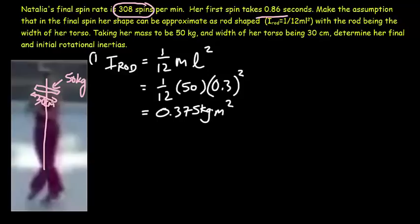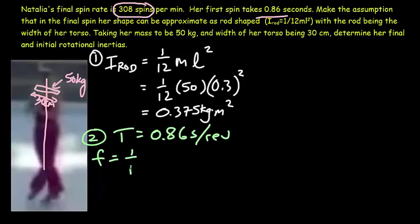So, that's step 1. Step 2, what we're going to do is calculate her initial rotational spin rate in revolutions per minute. So, we know her period. It takes 0.86 seconds for one revolution. Of course, the frequency is just 1 over the period. And if you carry that out, you'll get 1.16 revolutions every second.